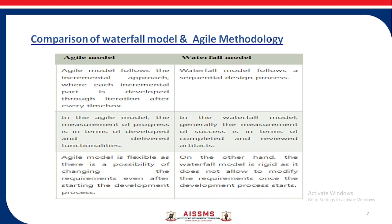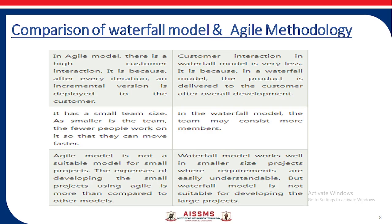The agile model is flexible, as there is a possibility of changing the requirement after starting the development process. The waterfall model is rigid, as it does not allow modifying the requirement once the development process starts. In the agile model, there is high customer interaction because after every iteration an incremental version is deployed to the customer. In waterfall, customer interaction is less because the product is delivered to the customer only after the overall development.